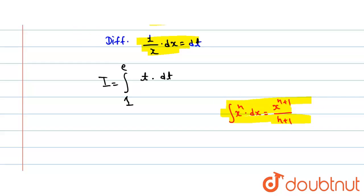So we get I is equal to integration 1 to e. Now the integration of t is what? t square by 2, and the limit is from 1 to e.